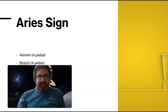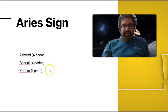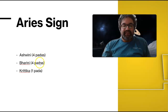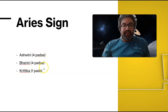If you think about the Aries sign, it's comprised of four padas of Ashwini, four padas of Bharani — the next nakshatra — and then one part of Krittika. So Aries comprises all of those padas: four padas of Ashwini, four padas of Bharani, and then Krittika's first pada.